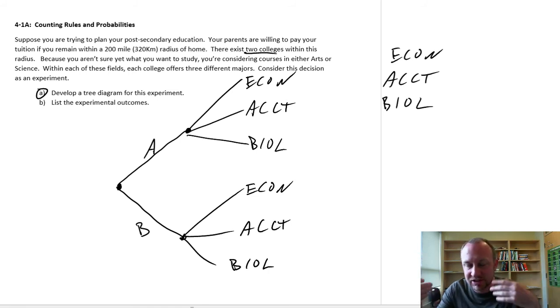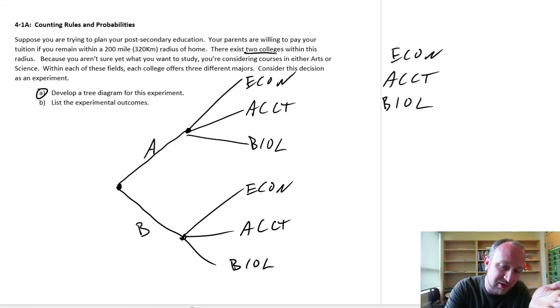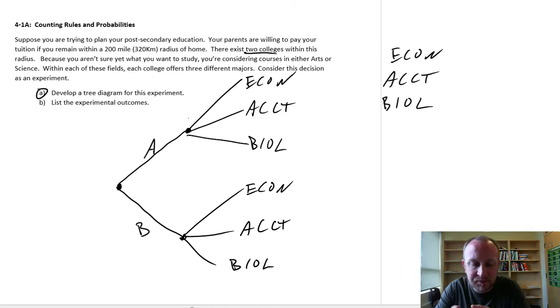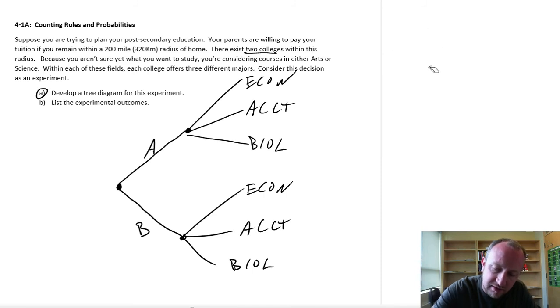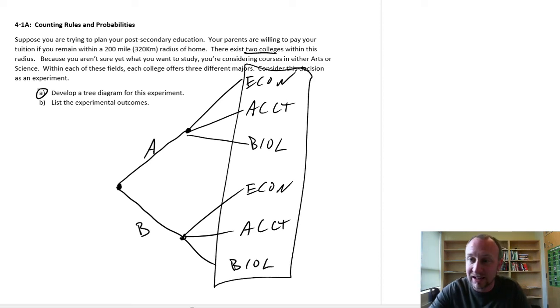Maybe I'm flipping a coin - which university am I going to go to? So it's either this one or this one. What are the possible experimental outcomes? So by producing a tree like this, I can see quite clearly what those different experimental outcomes are going to be.